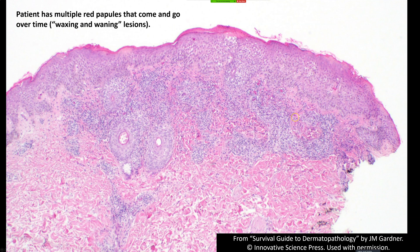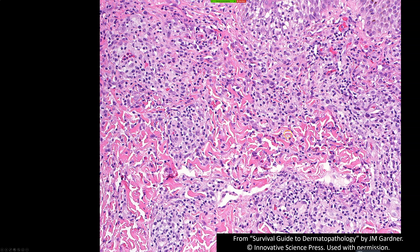Microscopically, what we see is an infiltrate — there's a little spongiosis with this one — but basically an infiltrate that's in the superficial dermis and kind of goes away as you get deeper. If you have a good imagination, you could picture it as wedge-shaped or upside-down triangle-shaped, but basically it's top-heavy: an infiltrate at the top of the dermis and not as much in the deep dermis.